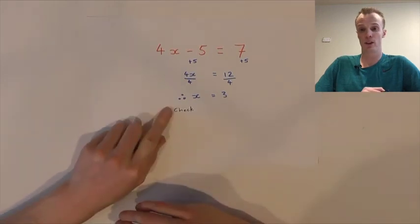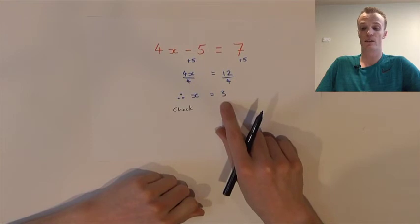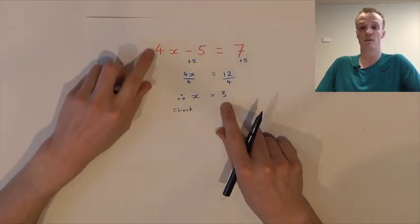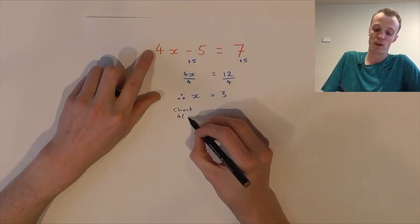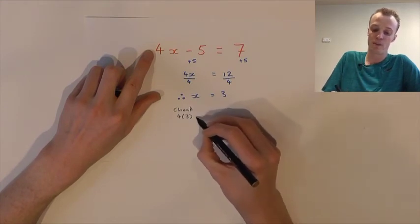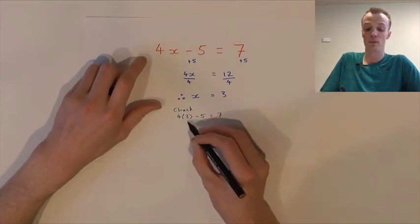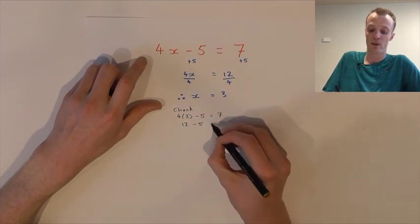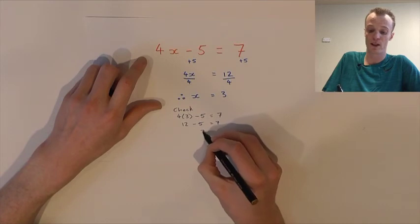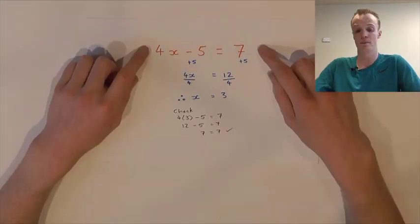We can form a check step — take our x value of 3 and substitute it back into the original equation. So 4 multiplied by 3, subtract 5, should equal 7. 4 times 3 is 12, and 12 take 5 should equal 7. 12 take 5 does equal 7, so 7 equals 7 — we are correct.